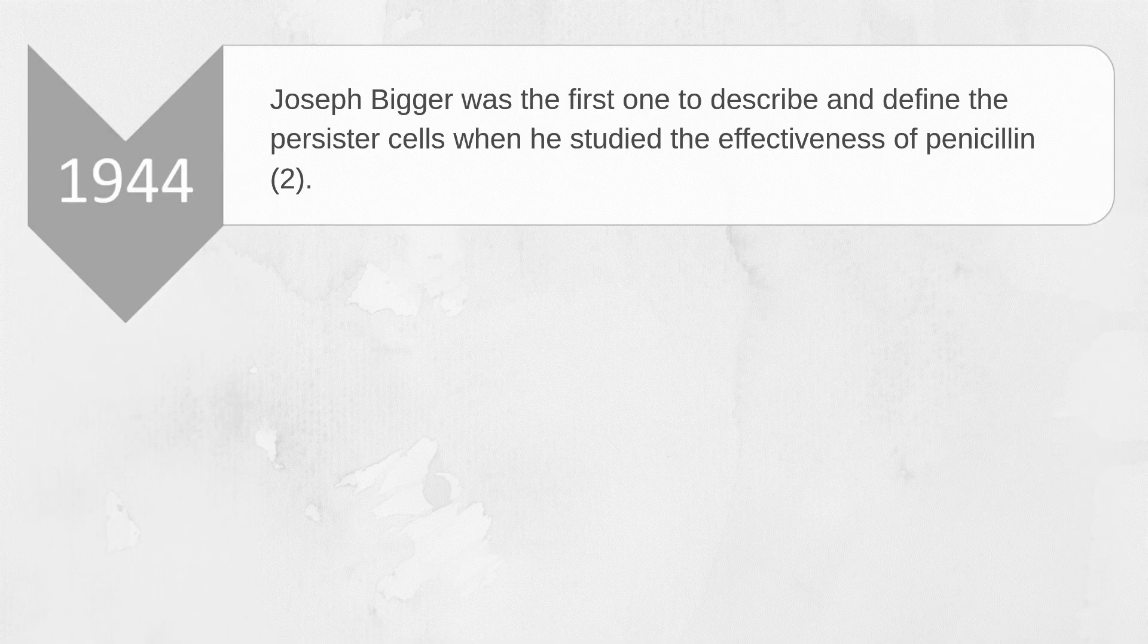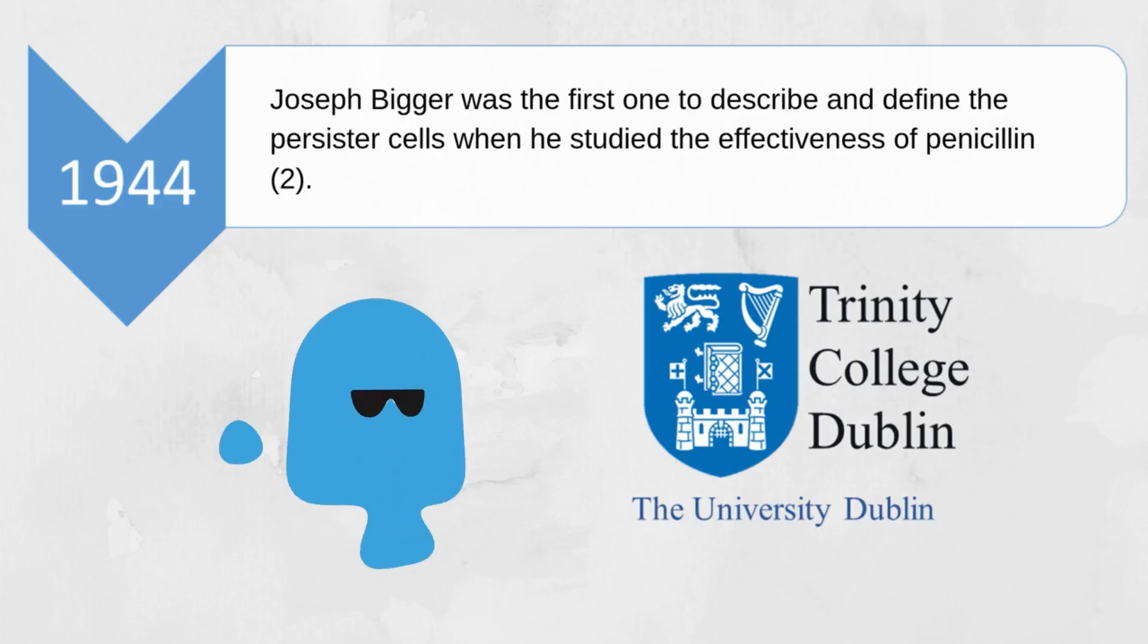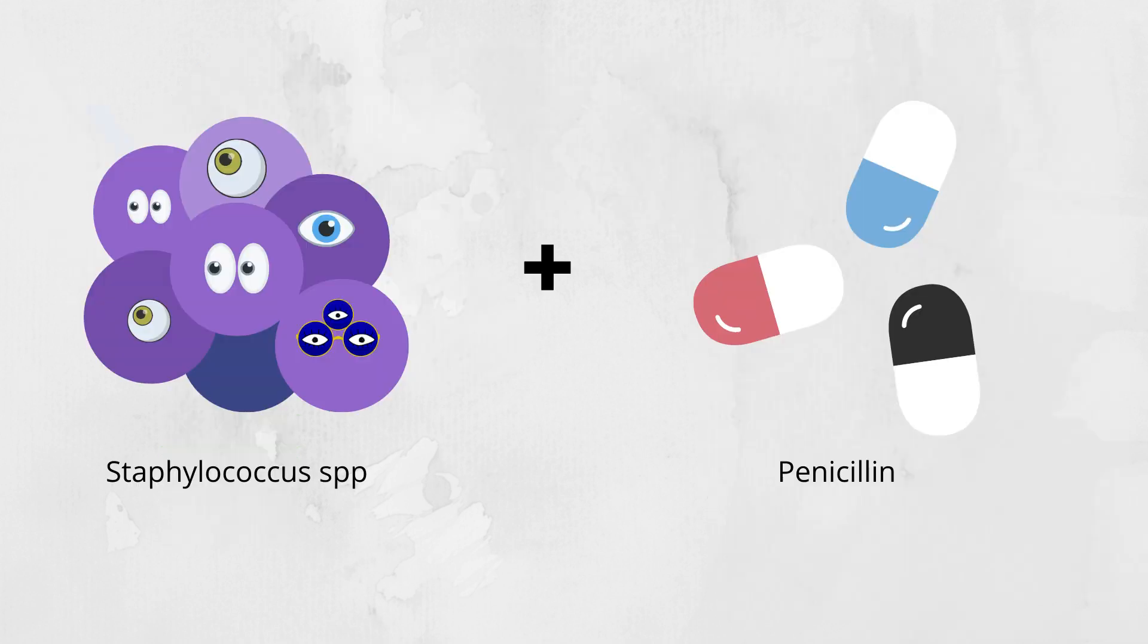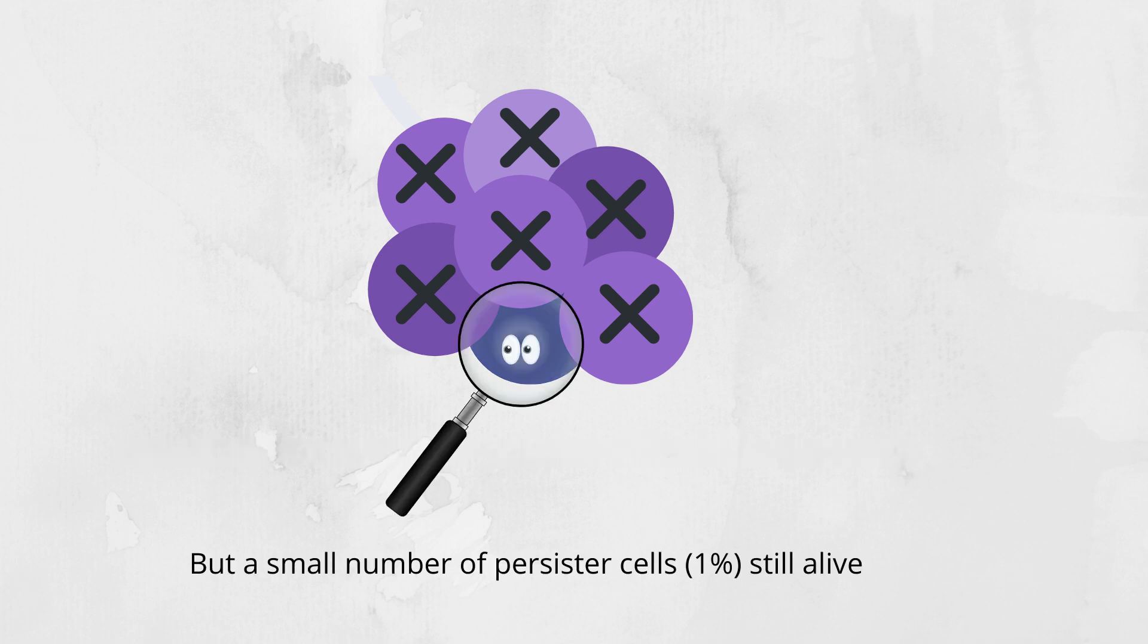Persister cells were first described by an Irish doctor who worked as a professor of preventive medicine and bacteriology at Trinity College of Dublin, Joseph Bigger, in 1944. He discovered them while he studied the effectiveness of penicillin.